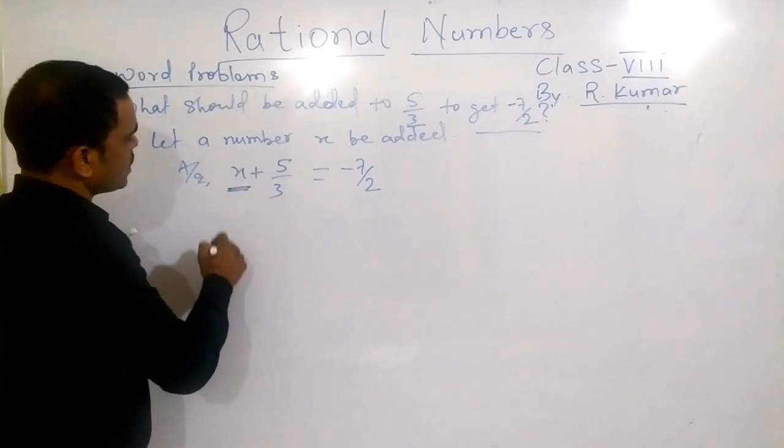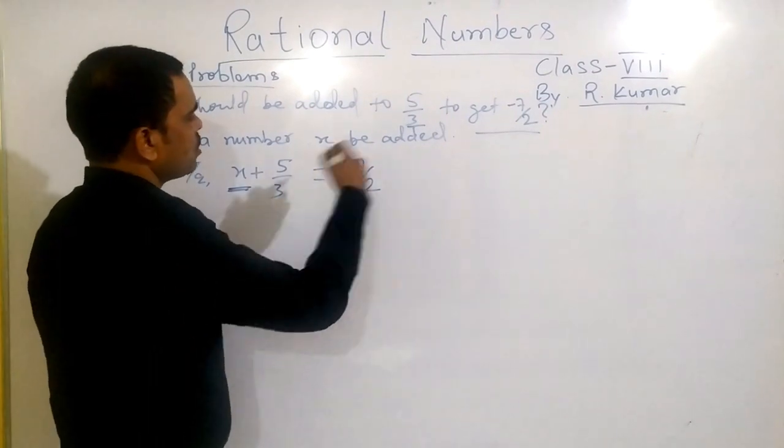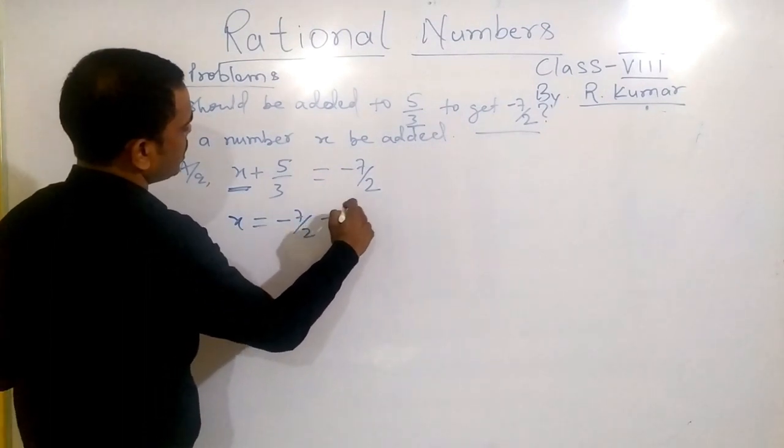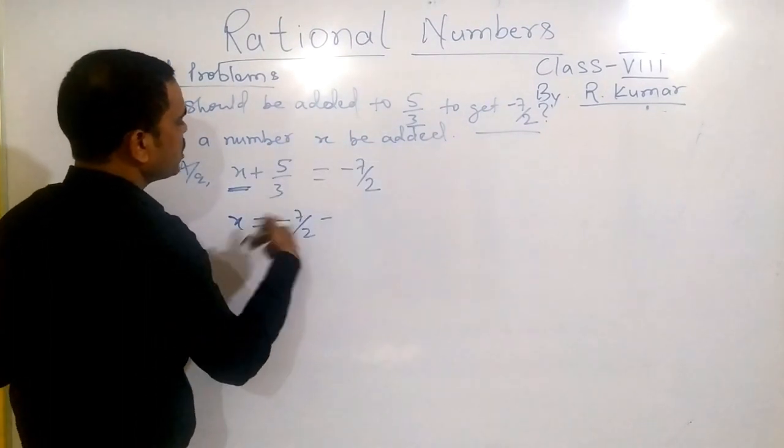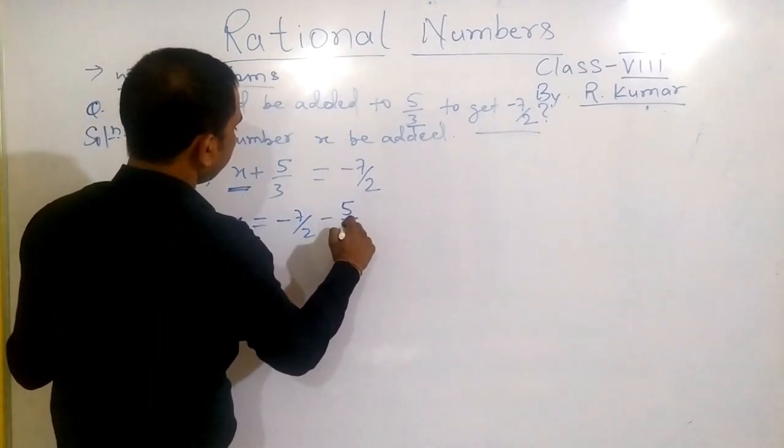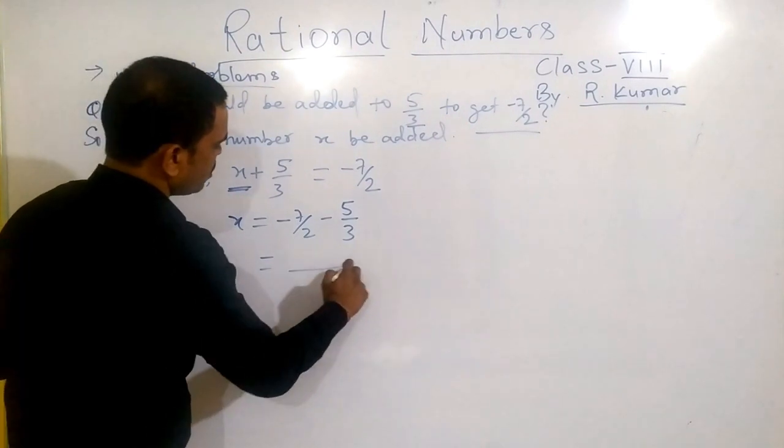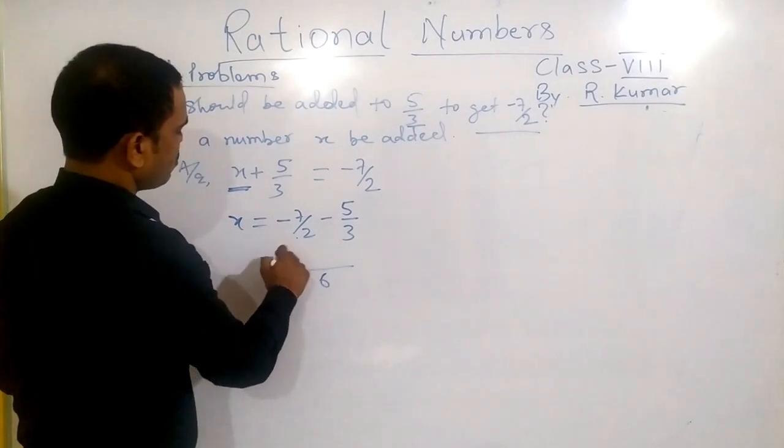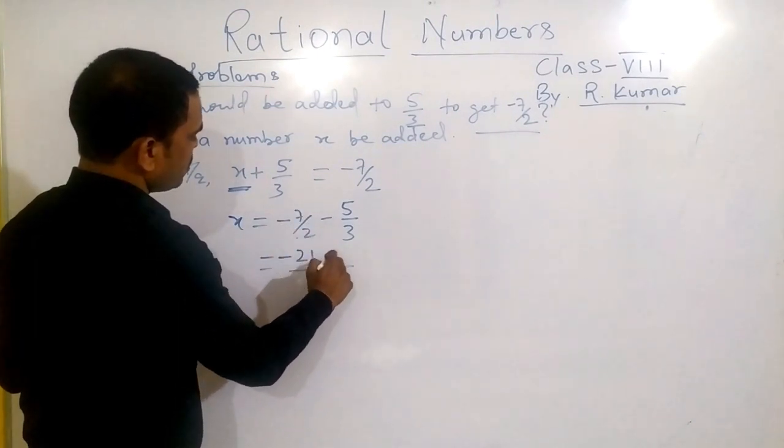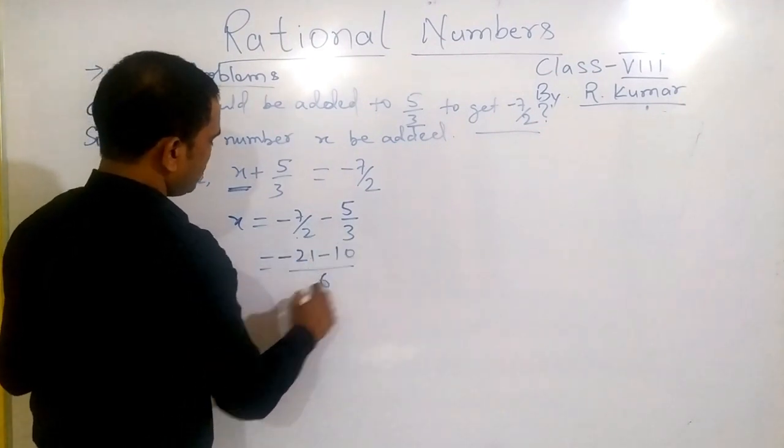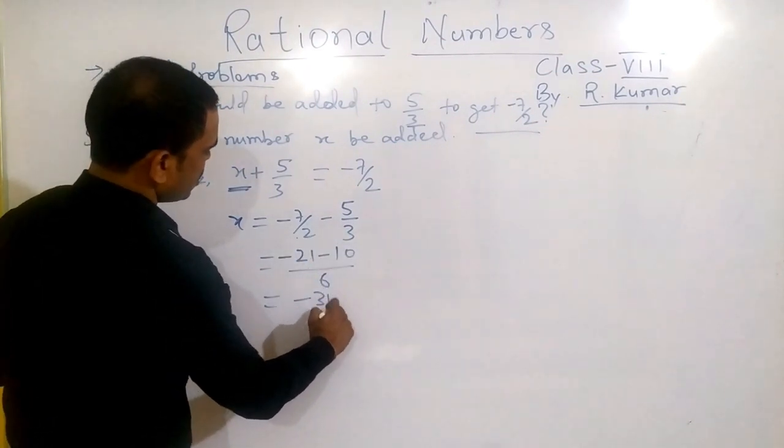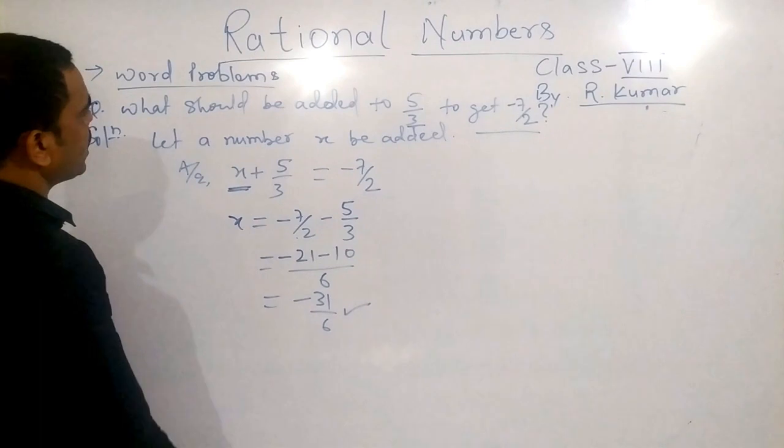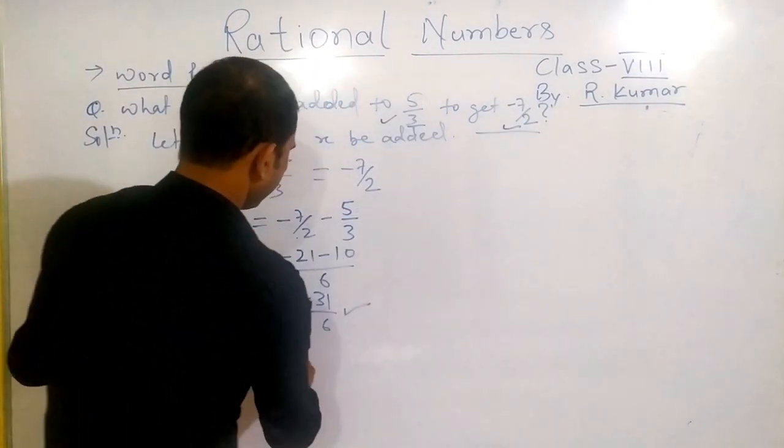Give this unknown term one side and the constant value on the other side. So x will be minus 7 by 2 minus - it is plus, so when you shift that side it will be minus 5 by 3. Now you will take LCM, 2 and 3, LCM is 6. Minus 21 minus 10. When you solve it, it will be minus 41 by 6. This value we will add to this and we will get this. This will be the answer.